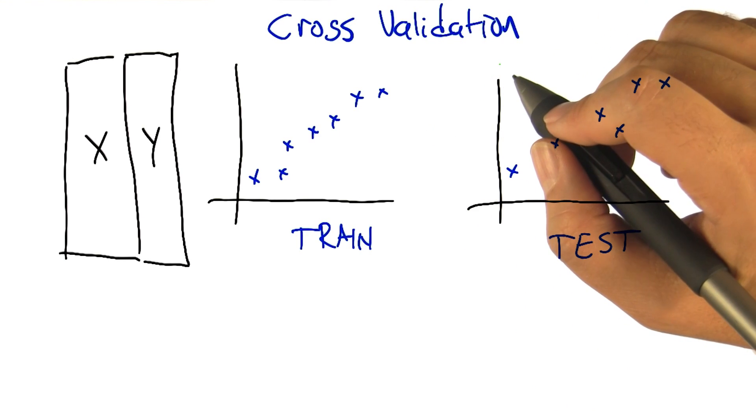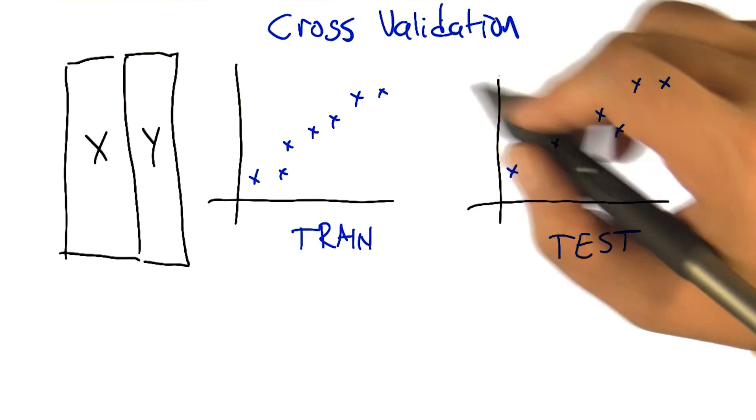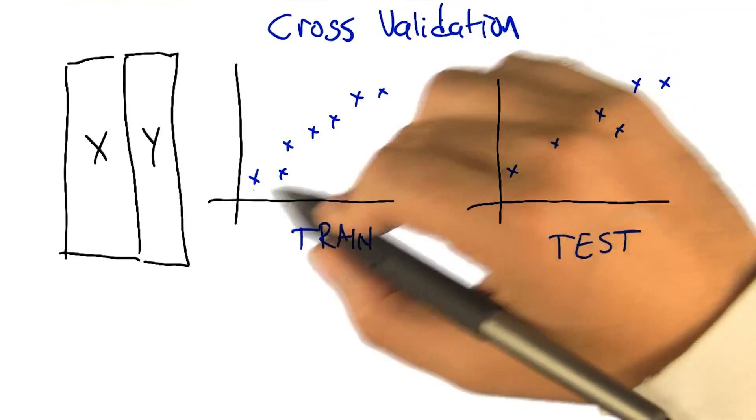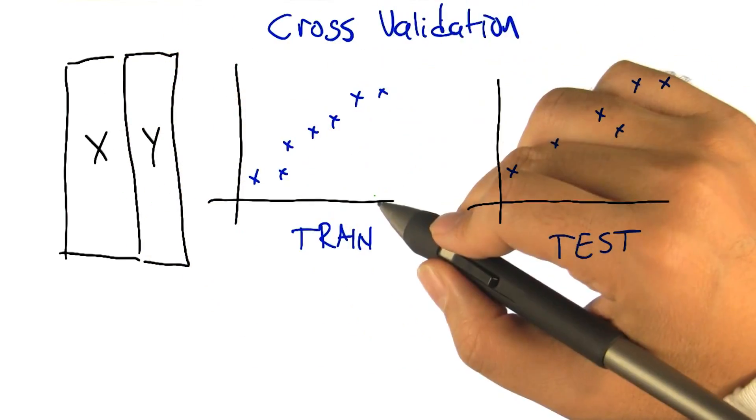All right, so let me try to get to this concept of cross validation. Imagine that we've got our data - this is our training set. We can, again, picture it geometrically in the case of regression.